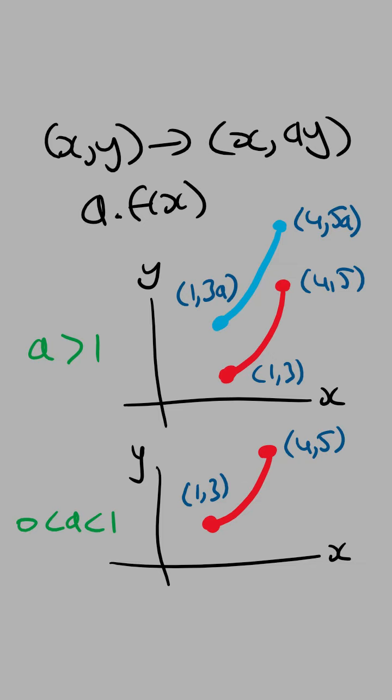And so for this graph, if we have the same points, after a dilation by a factor of a from the x-axis, where a is between 0 and 1, we're still going to get the same points (1, 3a) and (4, 5a), but this time the y-coordinates are going to be smaller.